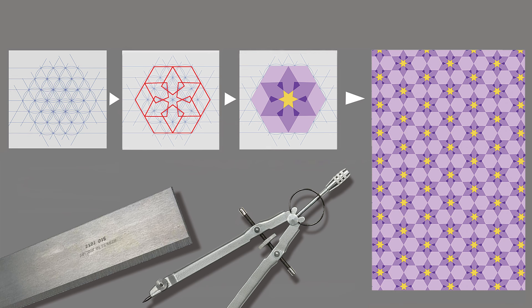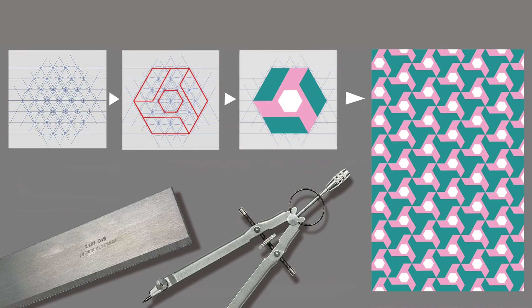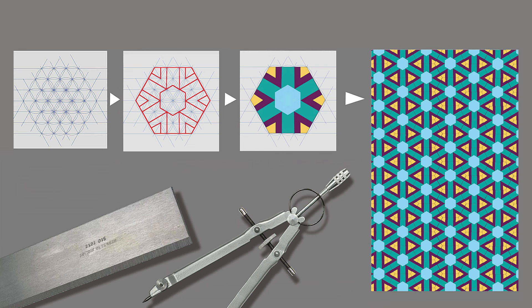We have another example coming from the same basic grid. And you can see that the visual variety can be striking. Here's yet another example and another one still. And one more, all based on the same fundamental hexagonal-based grid.